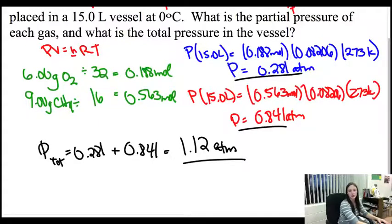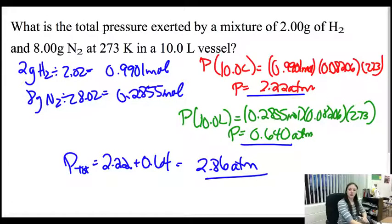And we get 1.12 atmospheres. Partial pressures, total pressure. Go ahead and try the next one. You should get the pressure of H2 as 2.22 atm, you get the pressure of N2 as 0.640 atm, and we get a total add up to 2.86.